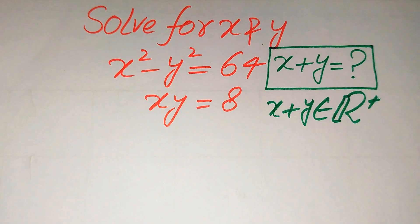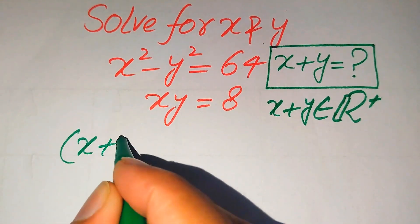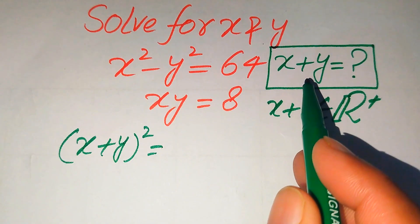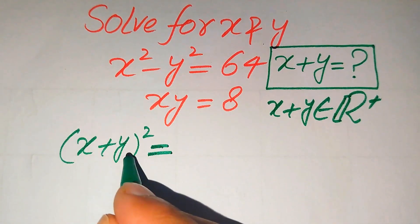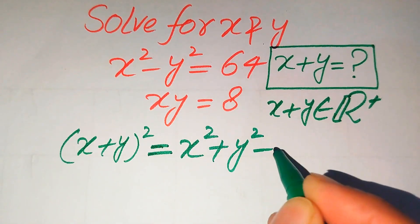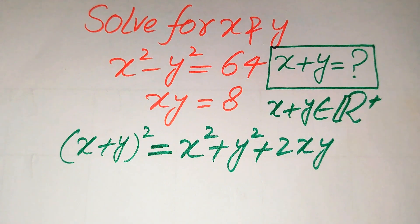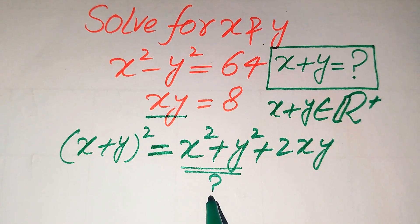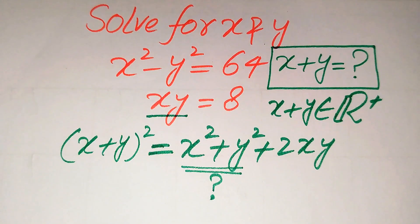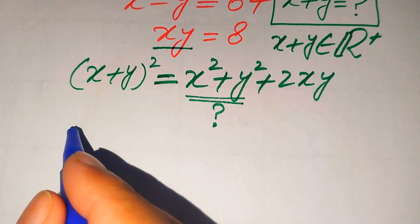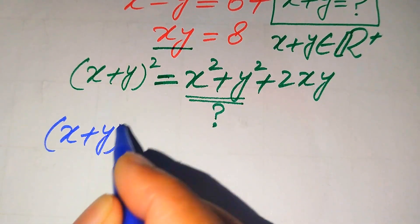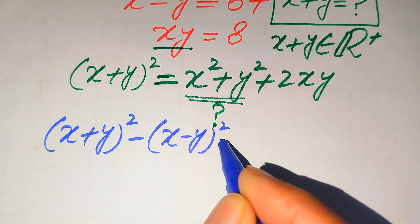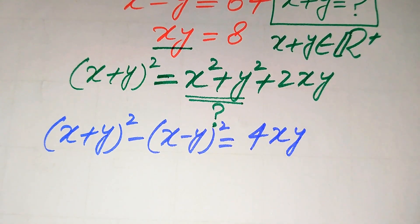For this we need two nice algebraic formulas. The first famous formula is: (x + y)² = x² + y² + 2xy. We need to find the value of x + y. We have xy = 8, which we can substitute, but first we need to find the value of x² + y². For that we use another formula: (x + y)² - (x - y)² = 4xy.